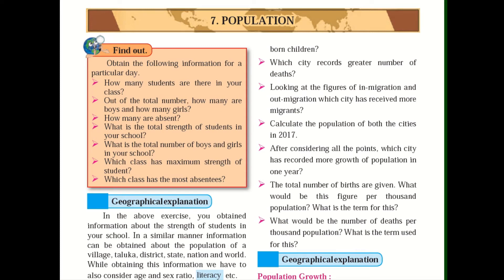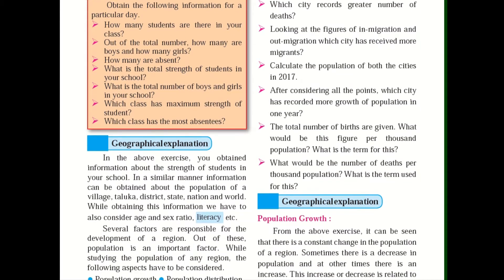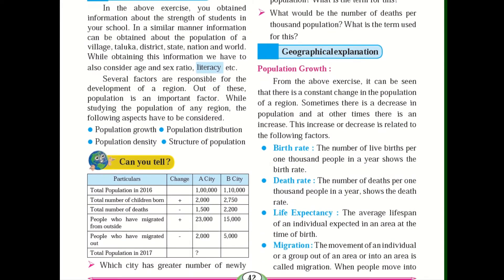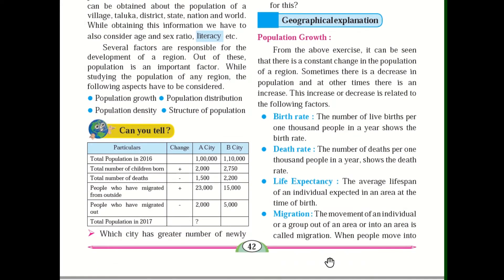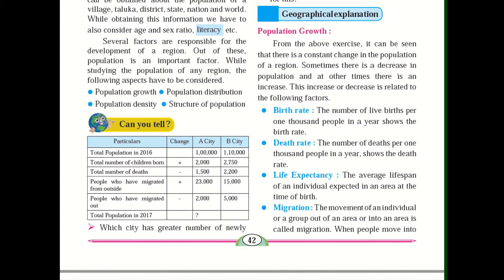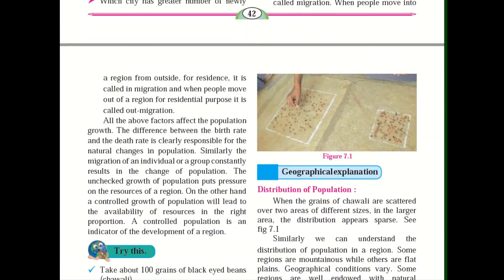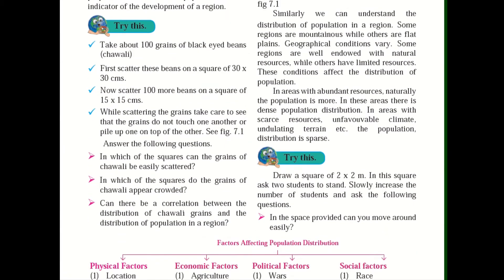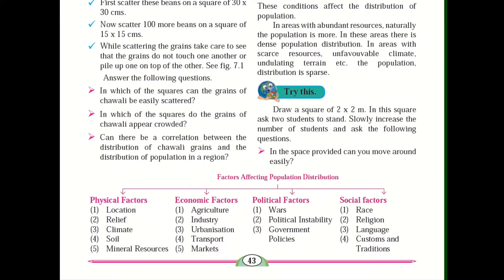Hello students. Last time we covered Lesson 7, that is population. Let us revise what we have done. We discussed what is population, we saw population growth, birth rate, death rate, life expectancy, migration of people, then distribution of population, and lastly we saw factors affecting population distribution.